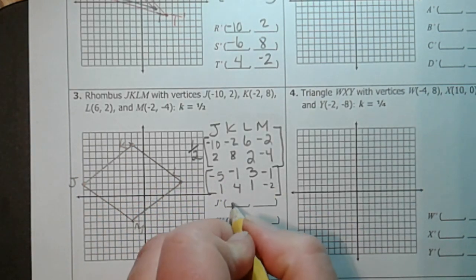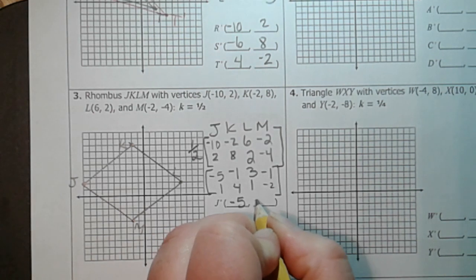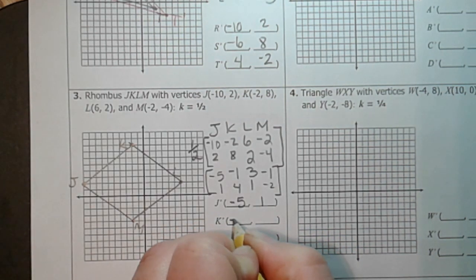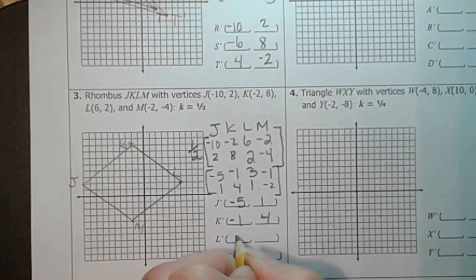So here's our new j prime, negative 5, 1. k prime is negative 1, 4. l prime is 3, 1. And m prime is negative 1, negative 2.